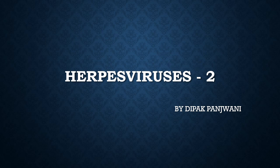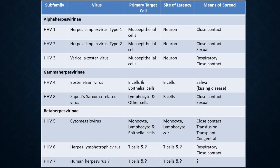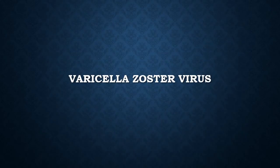Welcome to the e-learning session on Herpes Viruses Part 2. You are familiar with the classification of three major sub-families: alpha, beta, and gamma. In Part 1 we covered Herpes Simplex Virus types 1 and 2. In this lecture we will cover Varicella Zoster Virus, Epstein-Barr Virus, and Cytomegalovirus. HHV-8 can cause Kaposi's sarcoma. Now let us move forward to the Varicella Zoster Virus.